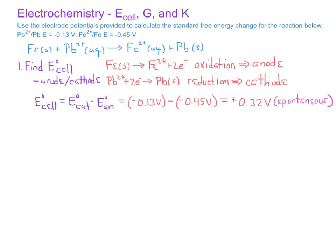The second step is to determine the number of moles of electrons transferred in the balanced chemical equation. In both half reactions, we see that there are two moles of electrons transferred. For iron metal going to iron two plus, it has to lose two moles of electrons. And for lead two plus going to lead metal, it has to gain two moles of electrons. So in this reaction, n has a value of 2.